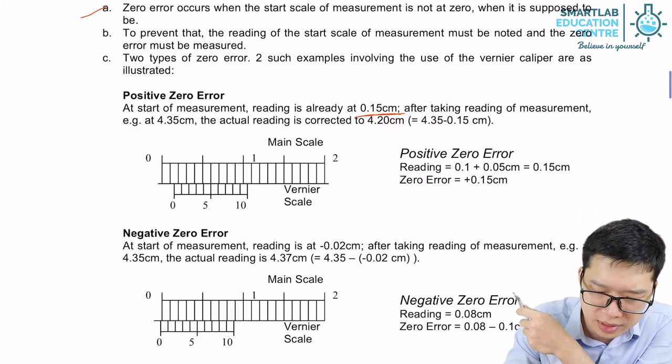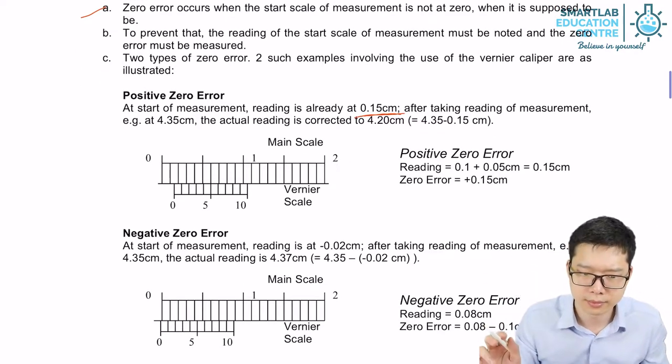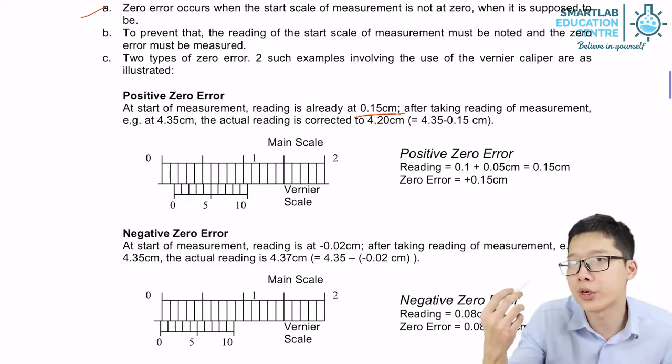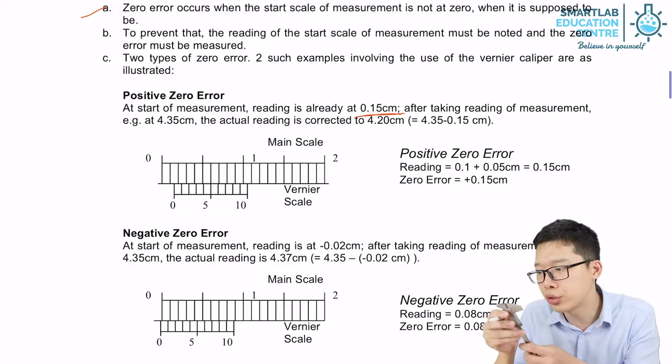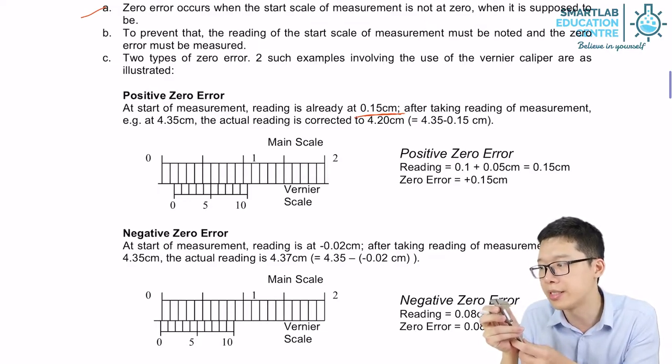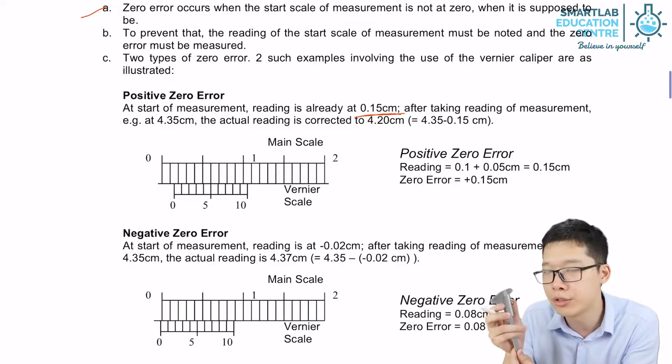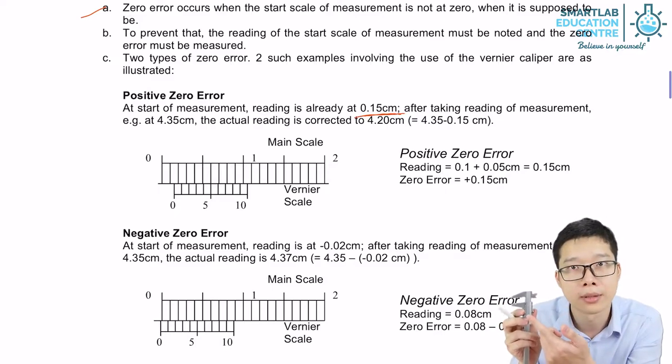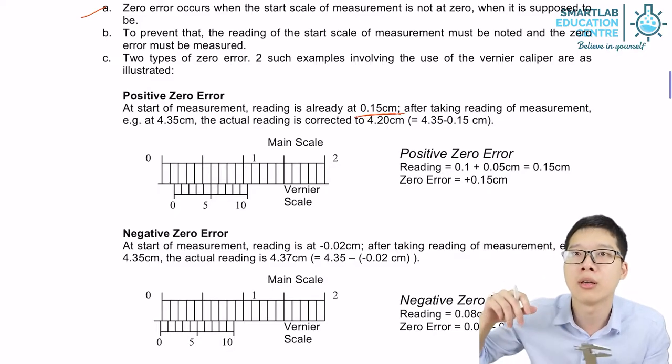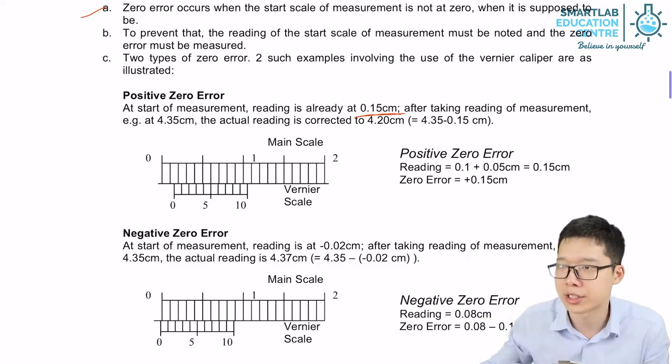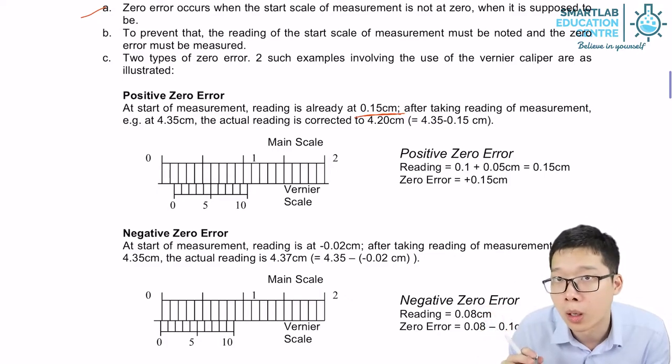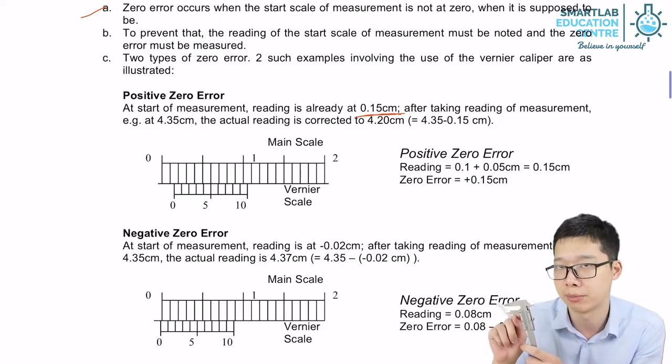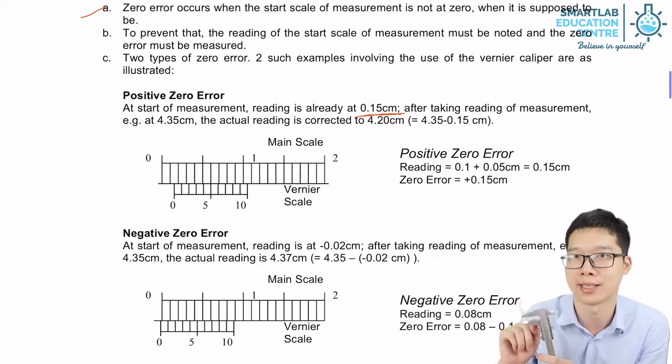So vice versa, if without putting anything, we have already gotten a negative reading. It means if you try to align it, make it zero, make the reading zero, there will be already a gap. It means no matter what and how much I try to make my reading accurate, the reading will still be smaller. The reading from your vernier caliper will still be smaller than the actual thickness.